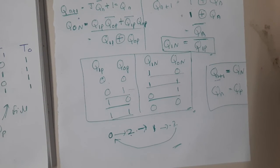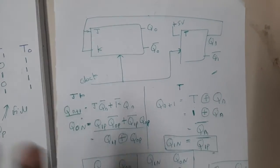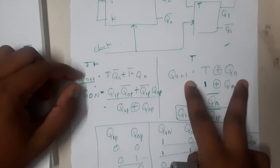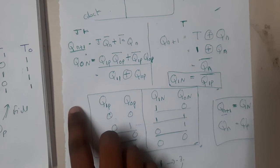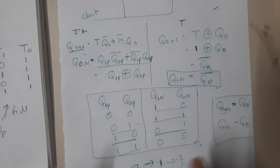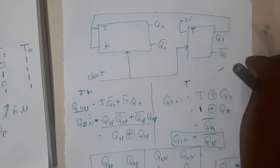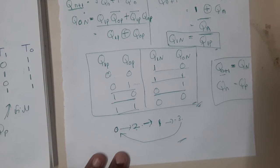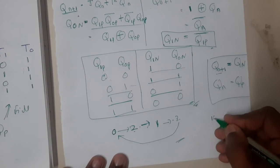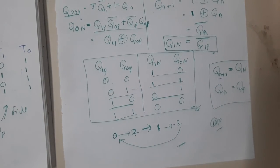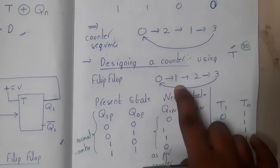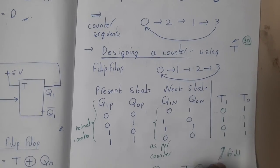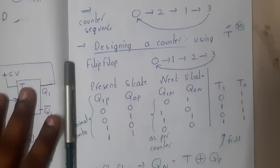To summarize: given a diagram, write the characteristic equations, draw the truth table for Q0p, Q1p (and Q2p if needed), solve for each next state, and convert to binary to get the counting sequence. There are more than 10 questions based on counters, and we will discuss them all in the PYQs. In the next lecture, we will do the reverse process — given a counting sequence, find the diagram.